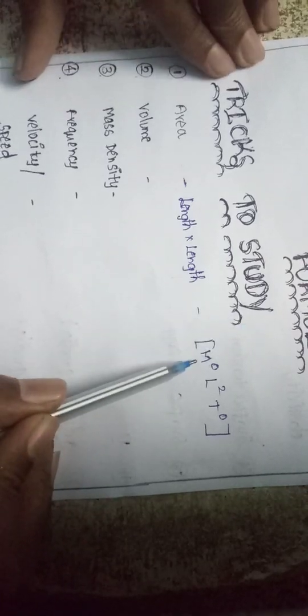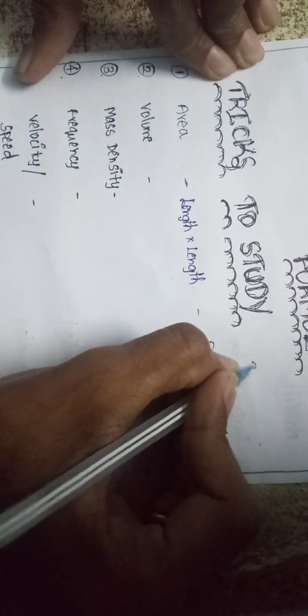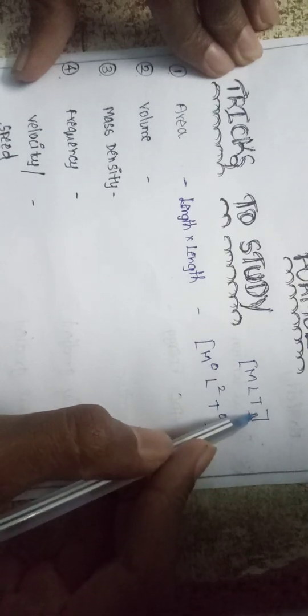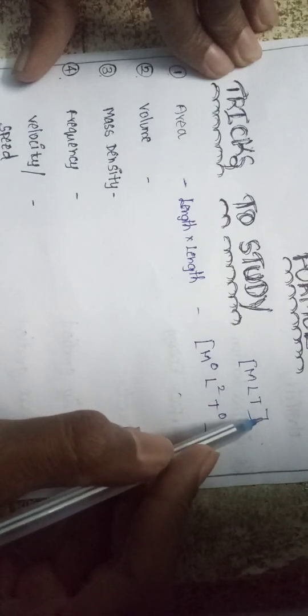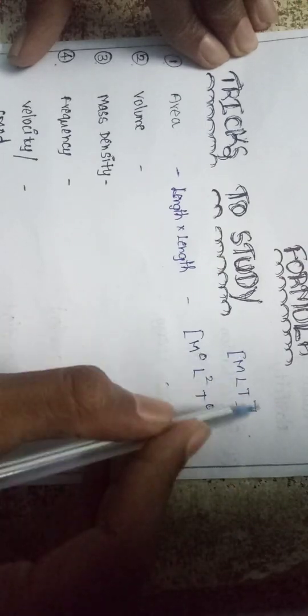First, know that area is equal to length into length. What is the dimension formula? It uses M, L, T — that is the notation. M stands for mass, L for length, and T for time. These are written inside square brackets.